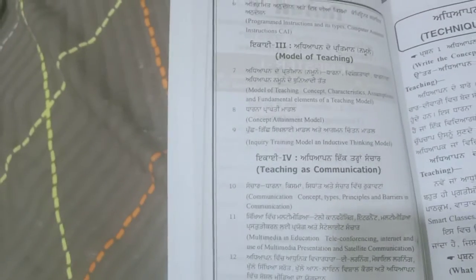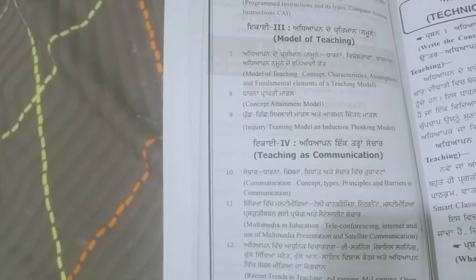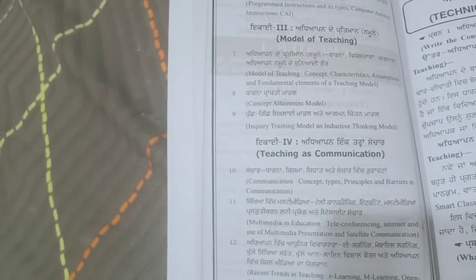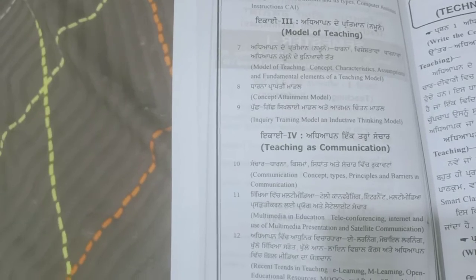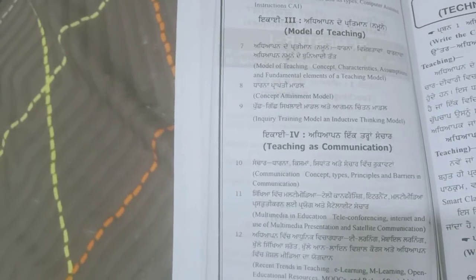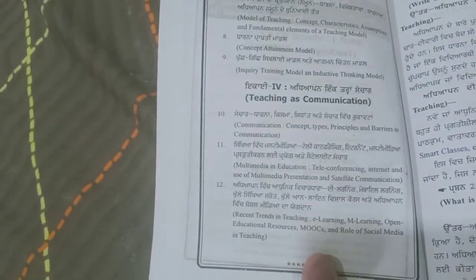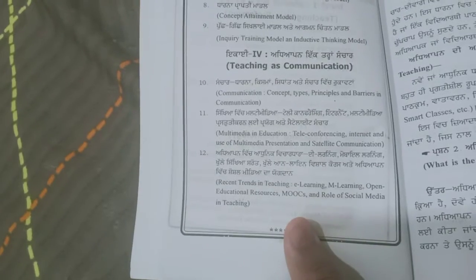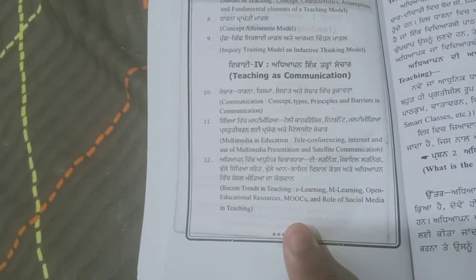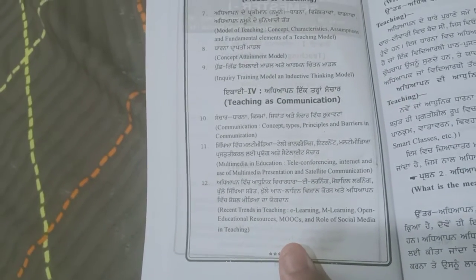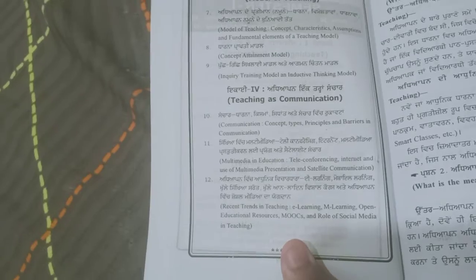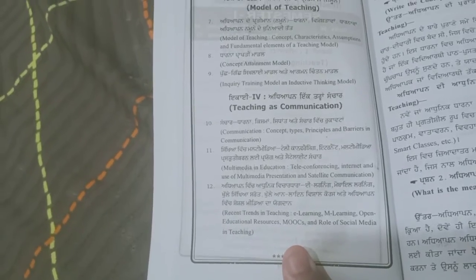Unit 3 covers models of teaching — concept, characteristics, assumptions, fundamental elements — concept attainment model, and inquiry training model. Unit 4 covers communication — concept, types, principles, and barriers — as well as multimedia education, recent trends in education, and more. All four units of the syllabus are covered.